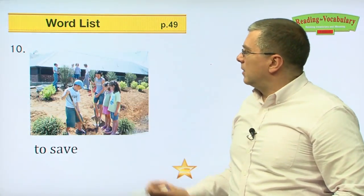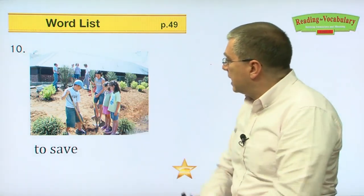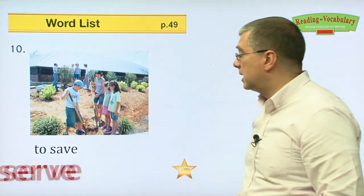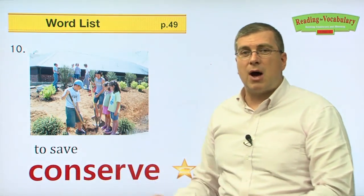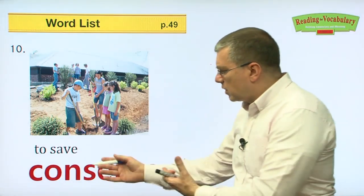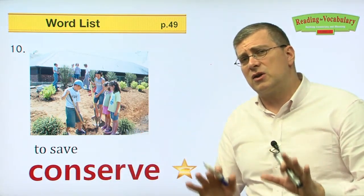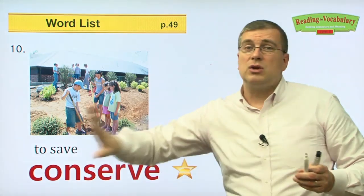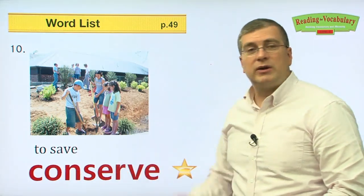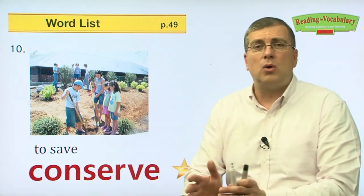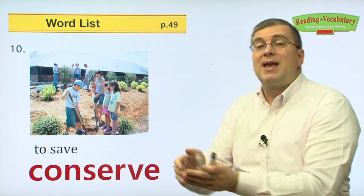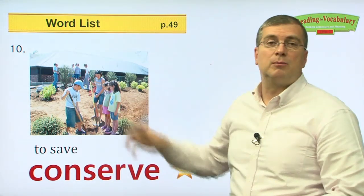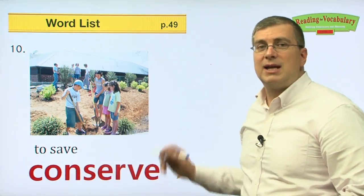Number ten. To save. They're digging in the ground to plant trees or bushes — they are trying to save the earth. What are they doing? They are conserving. Especially when we talk about protecting the environment, we are talking about conserving the earth. You can also conserve other things: turn off the light when you leave the room to conserve electricity. When washing hands, don't run the water the whole time — conserve water. Save water, save electricity, save the earth. That's conservation.